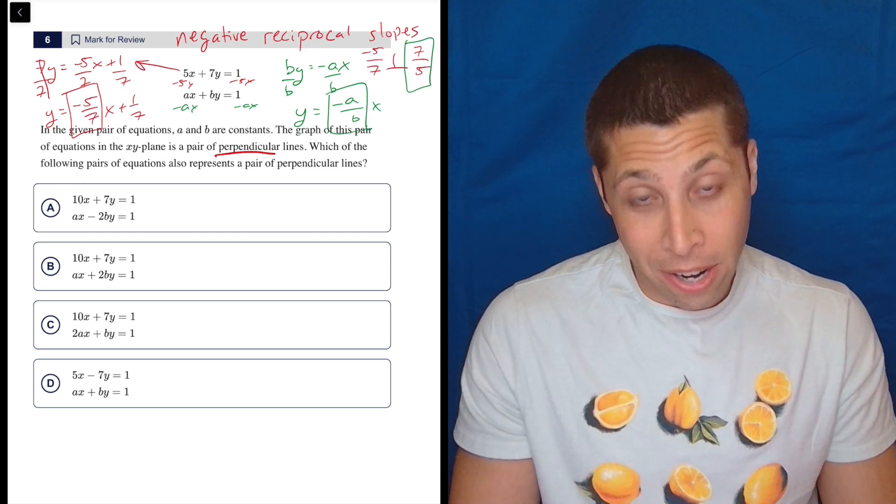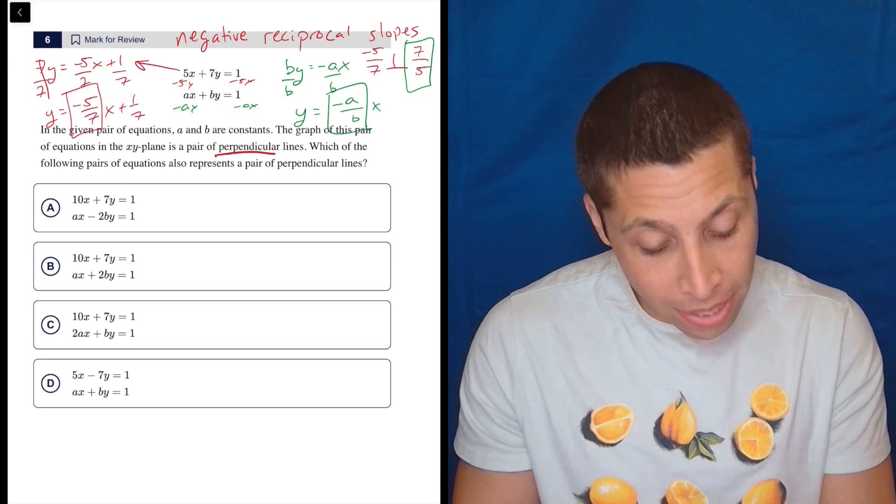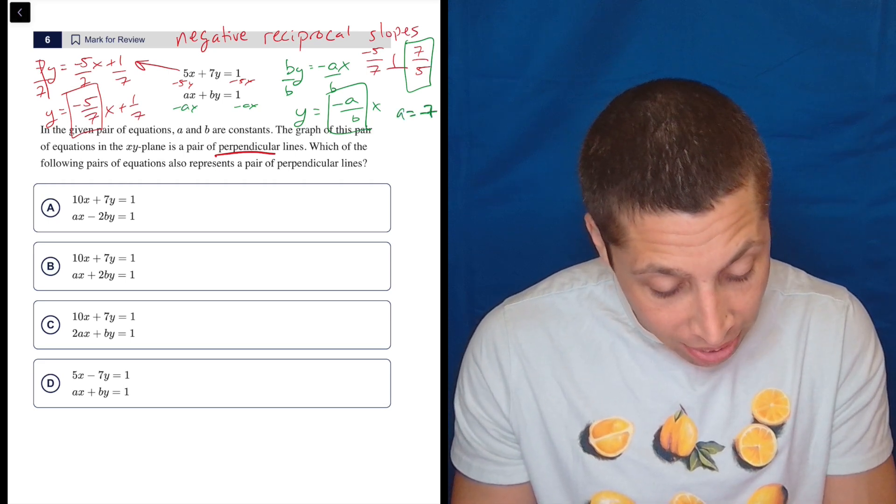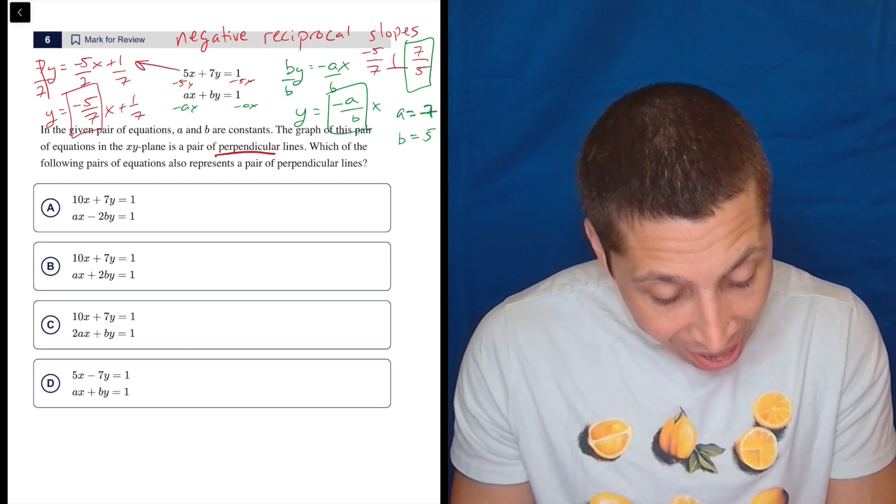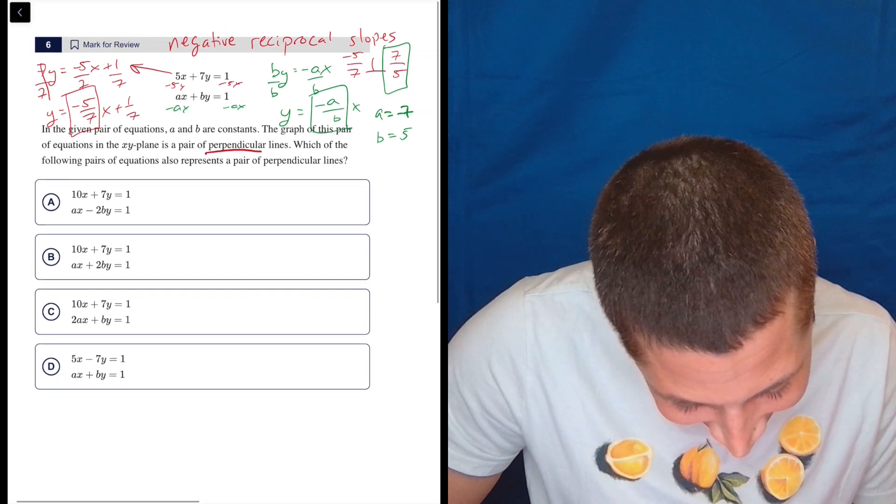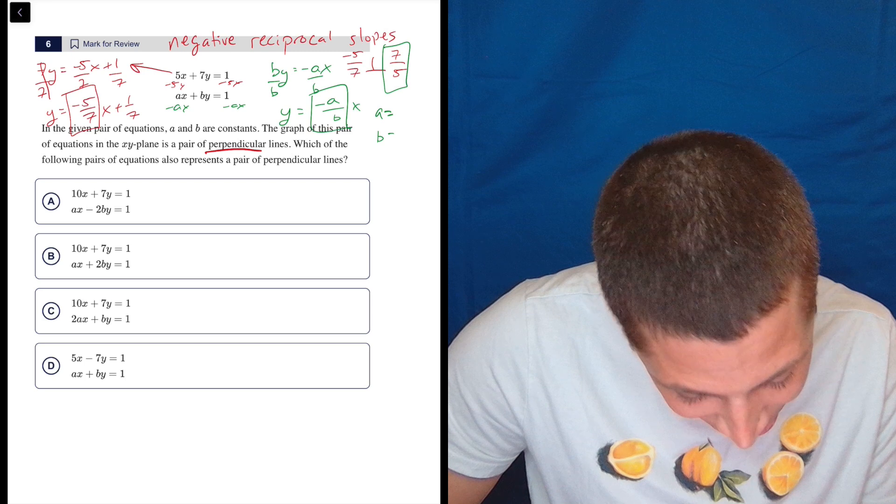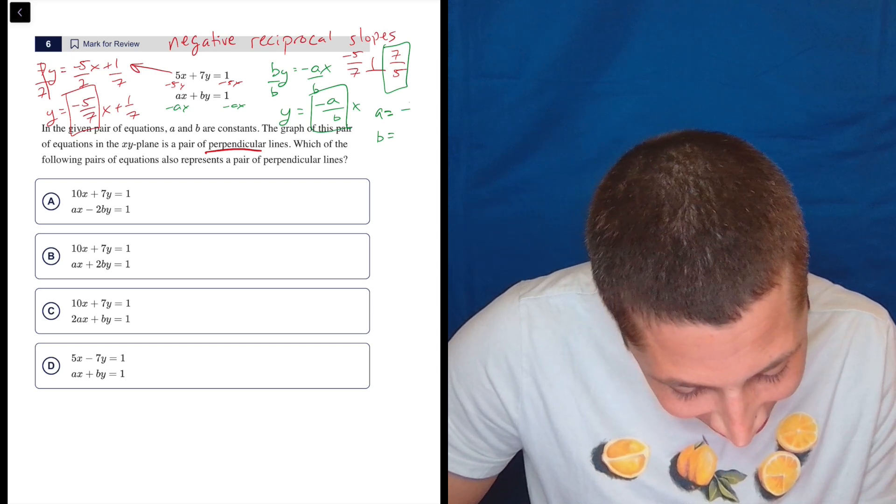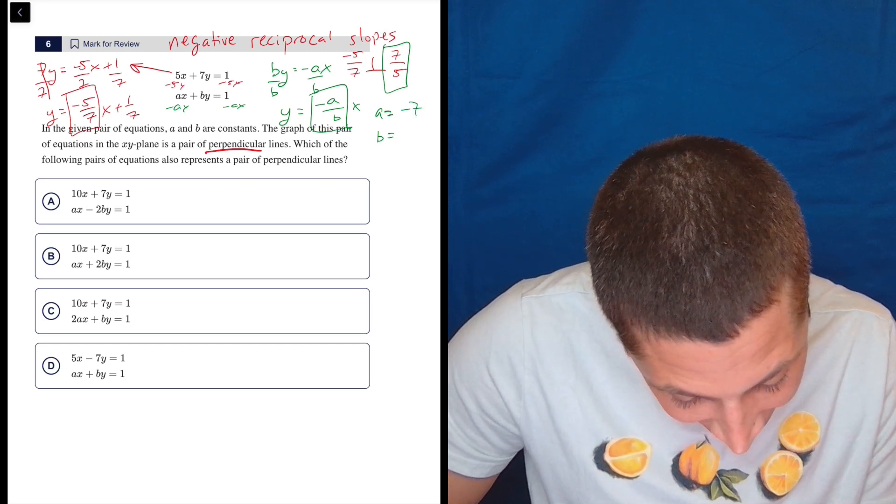So we have to compare that with this. So notice one thing that's weird here is there's no negative. So we should make the a, let's say, negative 7, and the b, 5. So it doesn't quite look like a negative 7 in there, but it is. Let's fix that so we don't lose track of that negative.